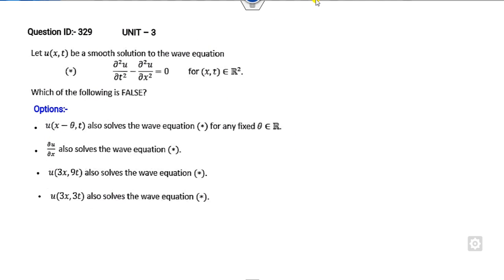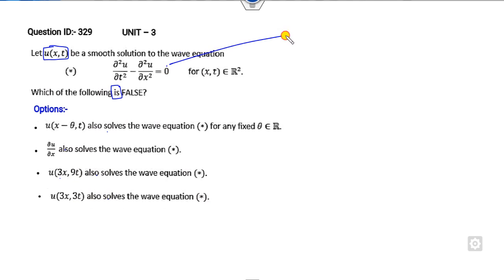Now look at the next question. Again, read the statement 10 seconds more than usual. What is given is the wave equation. This is the solution of the wave equation, and you have to check whether these other expressions are also solutions. There is only one correct option. This is a homogeneous equation of even degree.